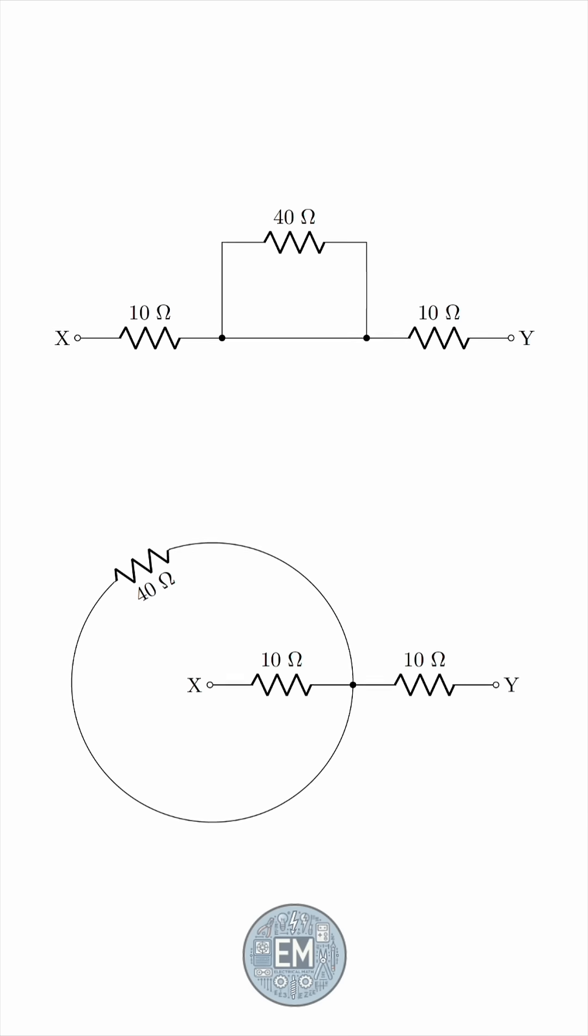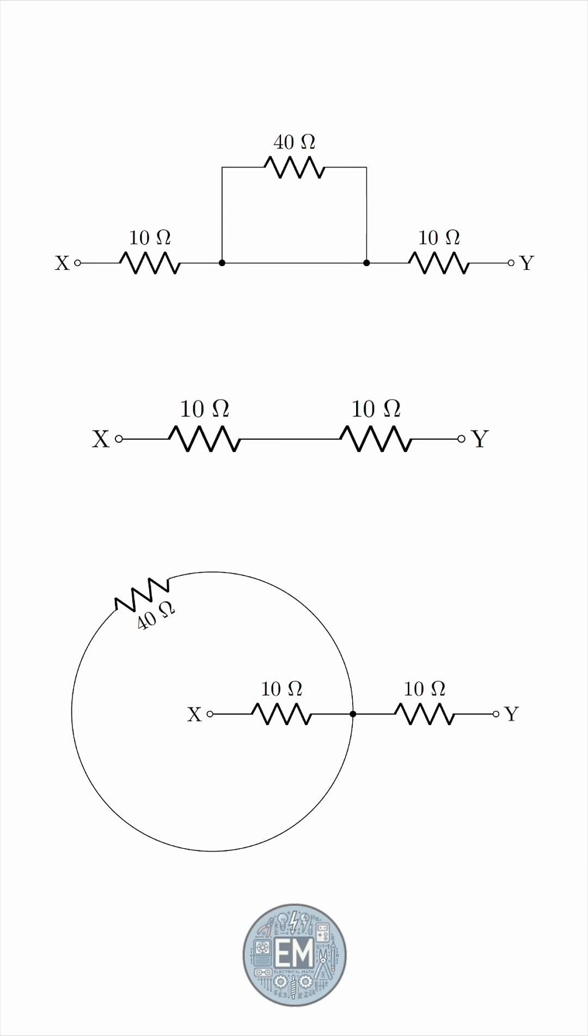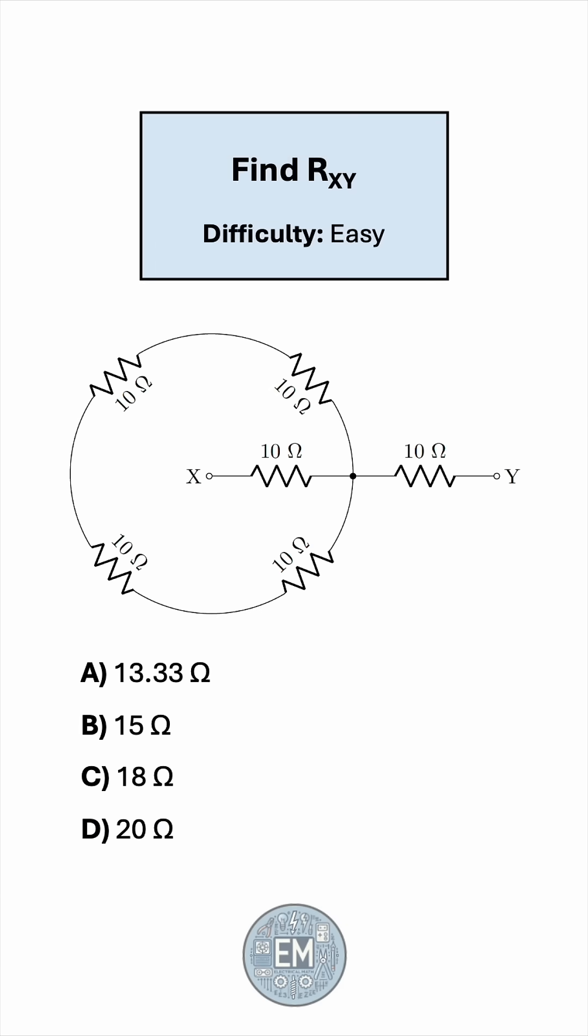No matter which way you think about it, we basically have two 10-ohm resistors in series between X and Y. So, the overall resistance between the two terminals is 10 plus 10, or 20 ohms, making the correct answer D.